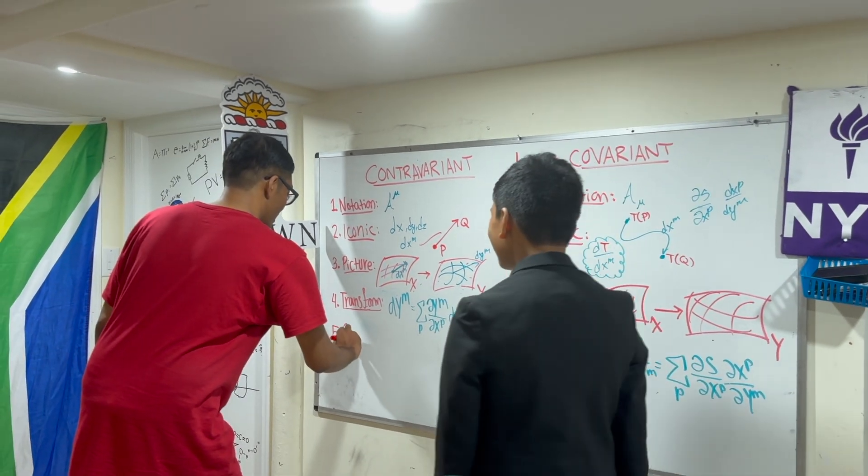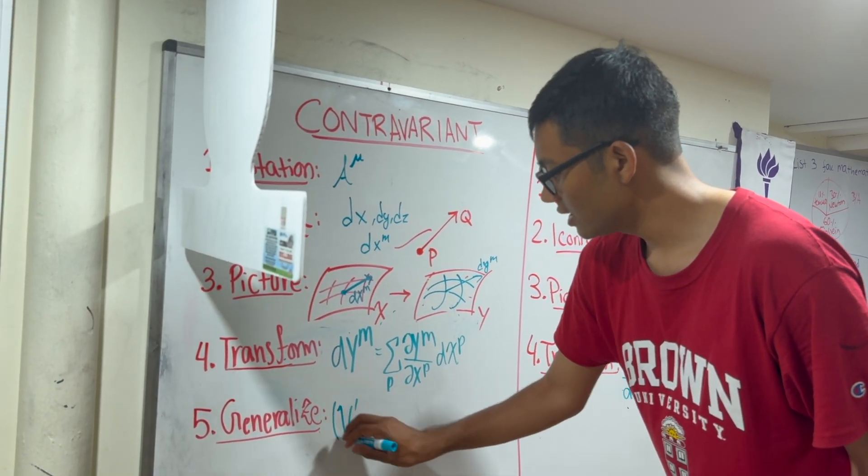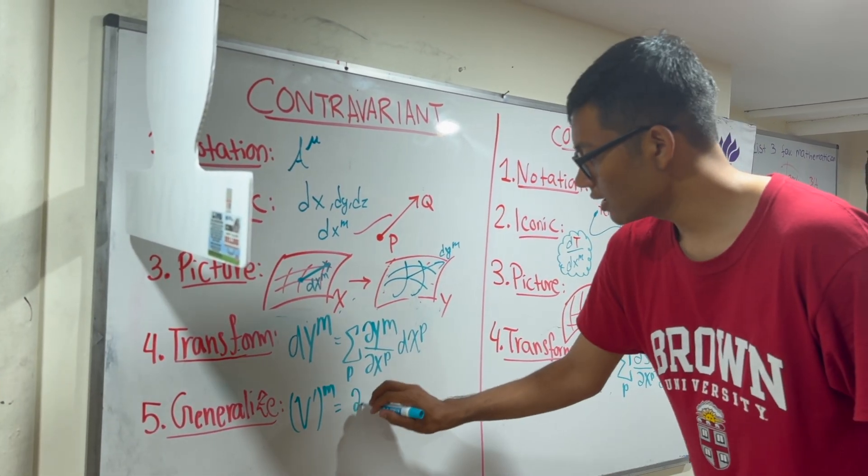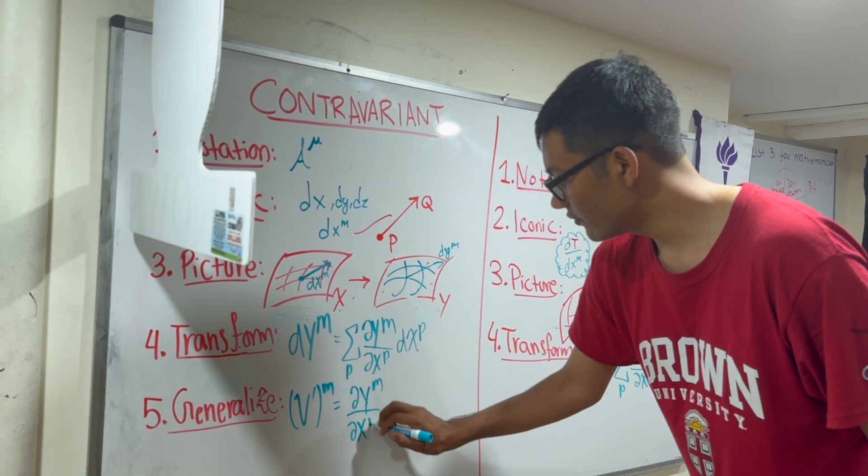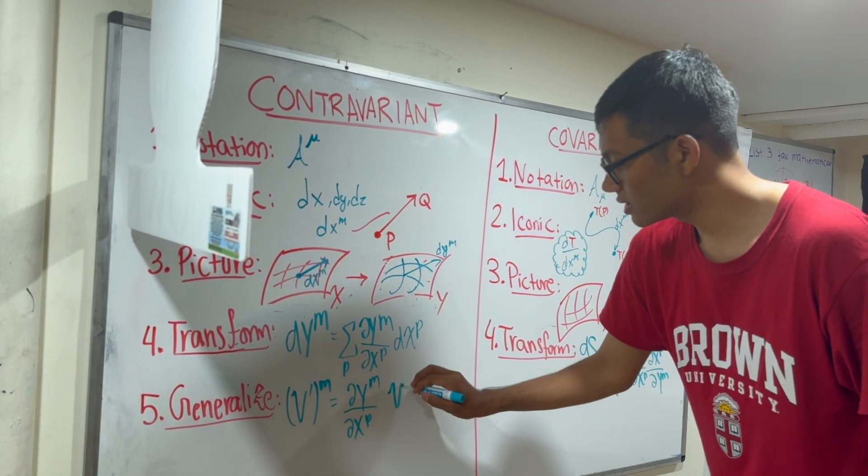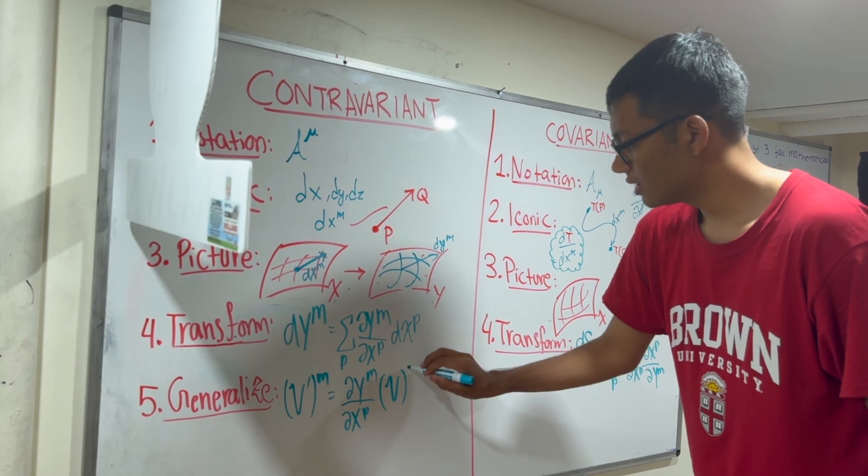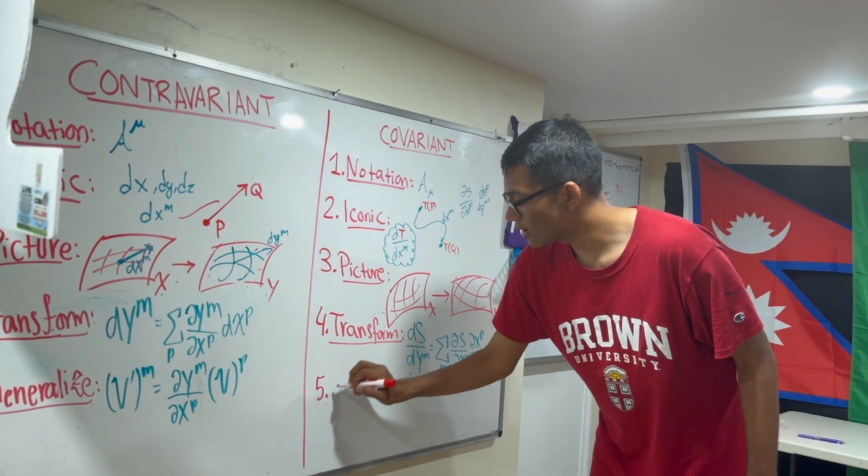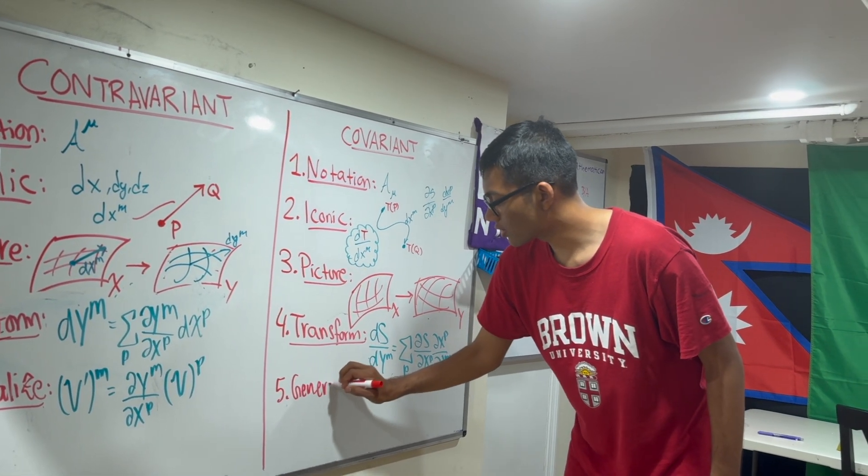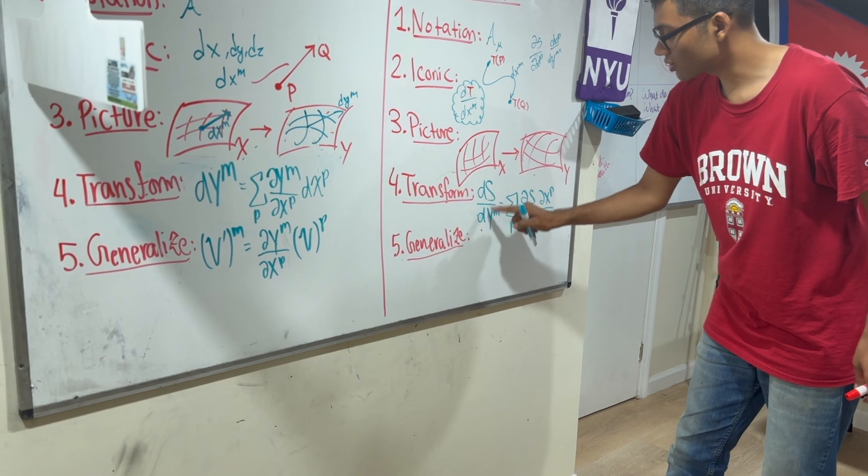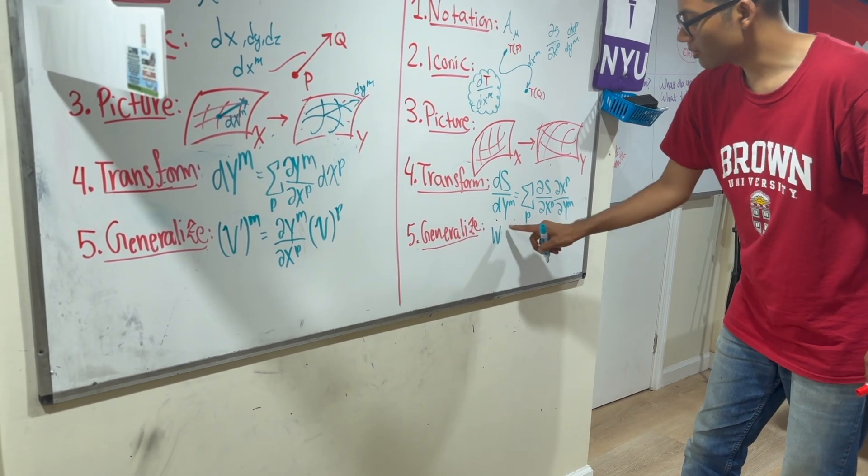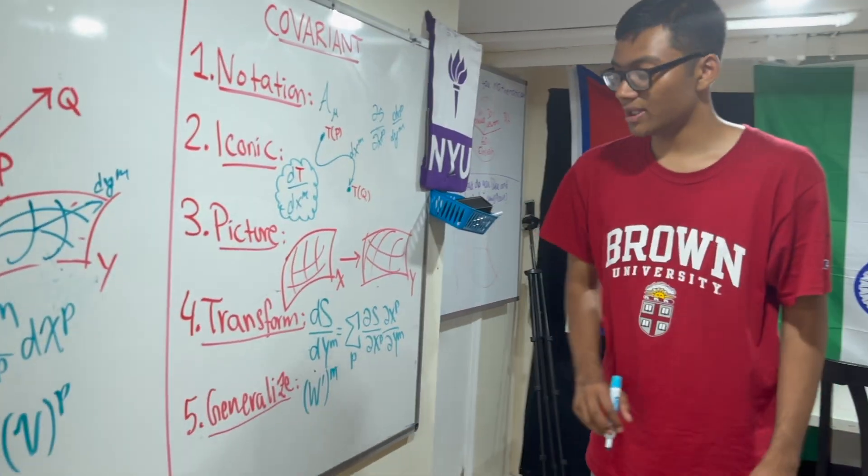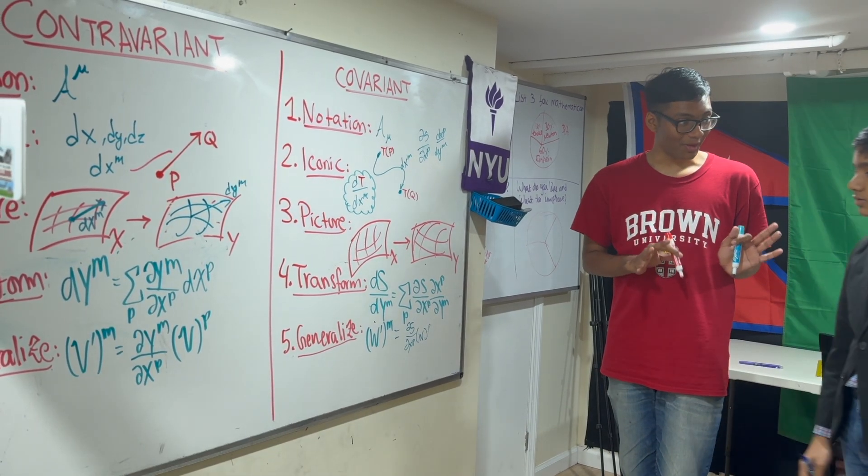Let's try to generalize the components of the tensor v in the new coordinate system are going to be partial y to the m power, partial x to the dummy variable times the components of our tensor v in the old coordinate system. That's the generalization.